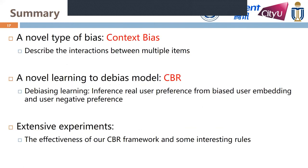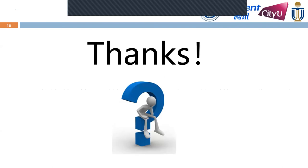Finally, let's take a summary. In this paper, we first propose a novel type of bias named context bias, which can describe the interactions when multiple items are shown to a user together. Then, we design a novel context bias-aware recommendation model named CBR to capture the influence of context bias and infer user preference from biased user behavior data. Finally, we conduct extensive experiments on a real-world dataset, which clearly validate the effectiveness of our CBR framework and reveal some interesting findings. This is the end of my presentation — thank you for listening. If you have any questions, please feel free to ask.